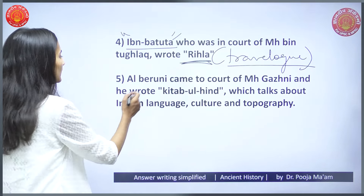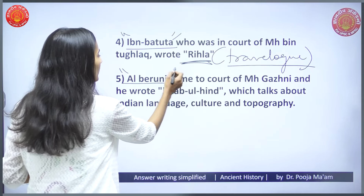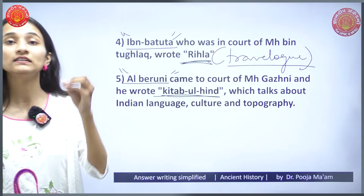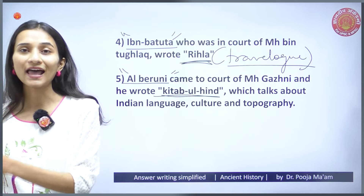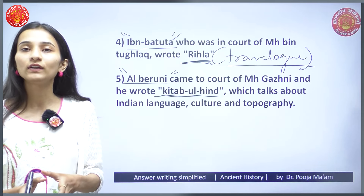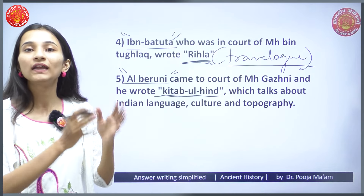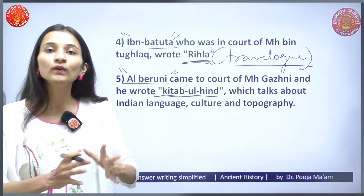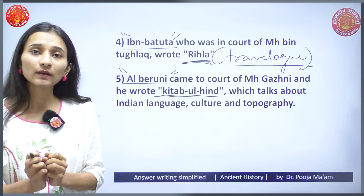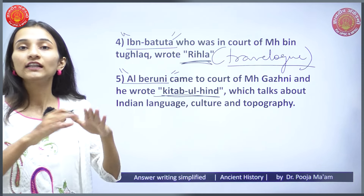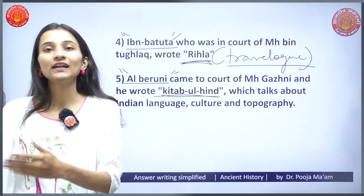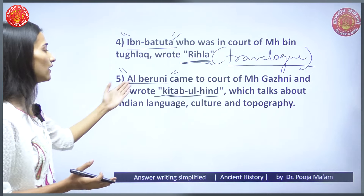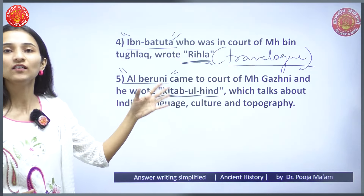Al-Beruni, who came to the court of Mahmud of Ghazni, wrote Kitab-ul-Hind. Kitab-ul-Hind is a detailed description talking about the language, geographical boundaries, and local practices of many communities at that time. From this, we get information about various civilizations of ancient India, geographical topography, and how settlements were organized — providing a detailed summary visible in this literature.